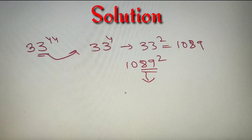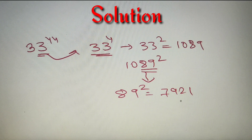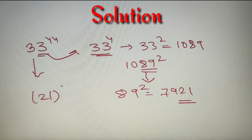Finding the square of 89: 89 squared is equal to 7921. So the last two digits are 21. Therefore, the last two digits of 33 raised to the power 4 are 21. Now we will raise 21 to the power 11, because we have already taken out 4 as a common factor, and this will eventually give us the last two digits of 33 raised to the power 44.